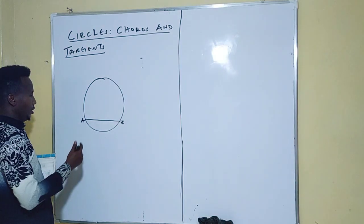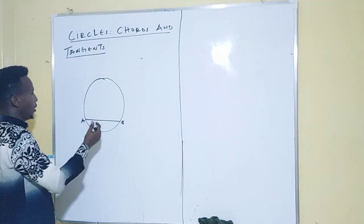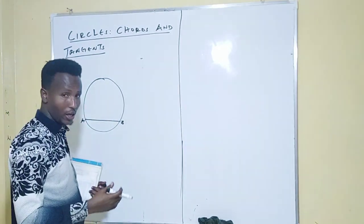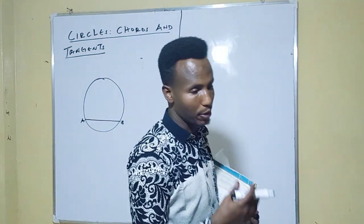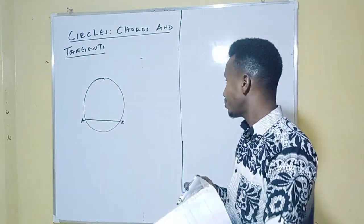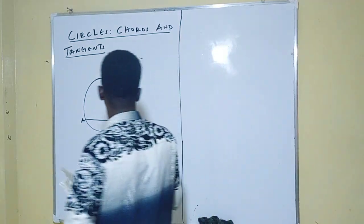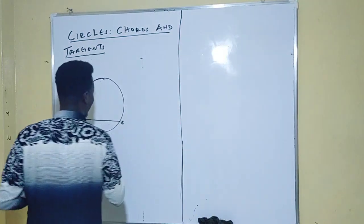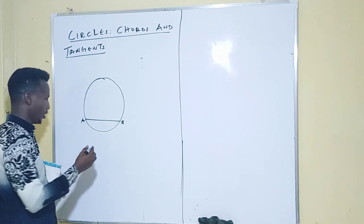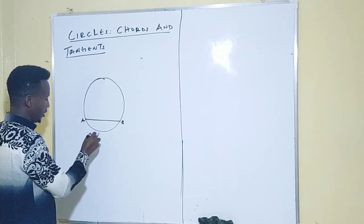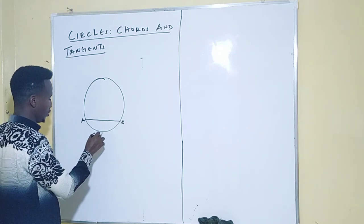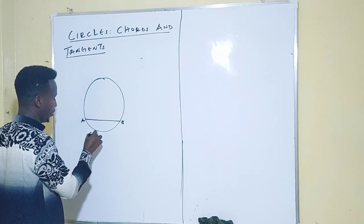When a chord becomes its maximum length, it is what you normally call a diameter. So a diameter is a mature chord, for your information. A tangent is a line which has one point of contact with the circle — one point of contact on the circumference of the circle.